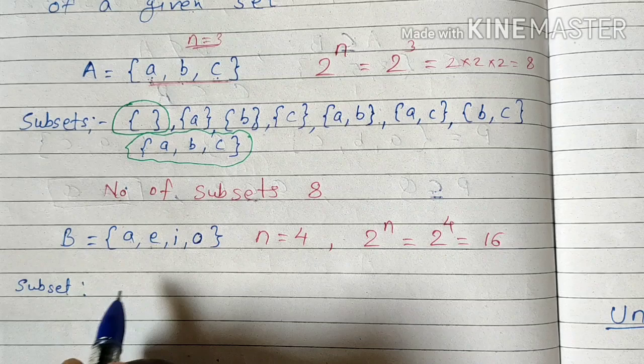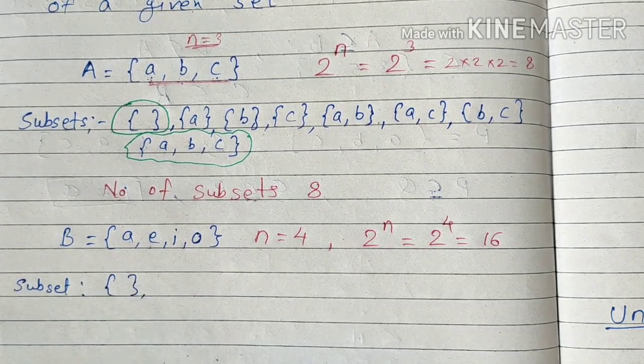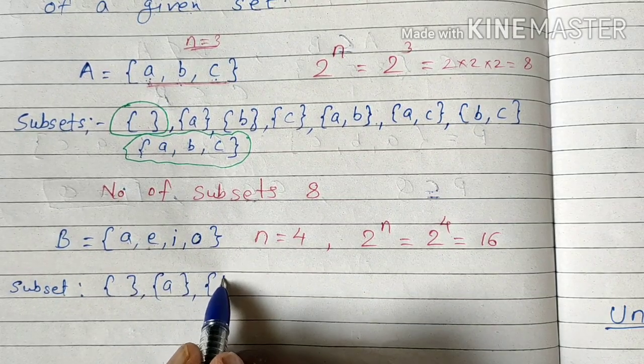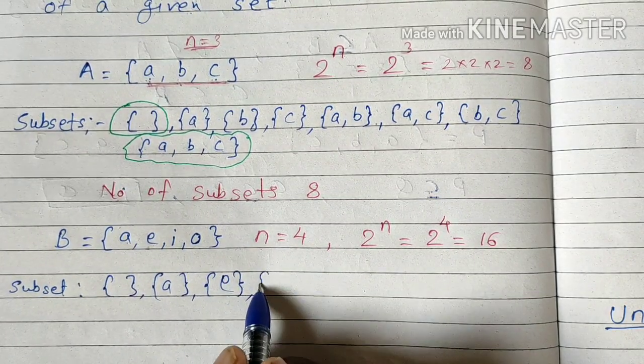So let us start with the empty set. Next is {a}, {e}, {i}.